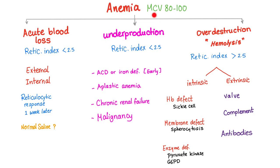The normocytic anemia, where MCV is 80 to 100, has three main causes: blood loss (which has to be acute), underproduction, and overdestruction. Underproduction has many causes — anemia of chronic disease, iron deficiency (discussed previously), aplastic anemia (discussed in the last video), and chronic renal failure or chronic kidney disease, which is today's topic.